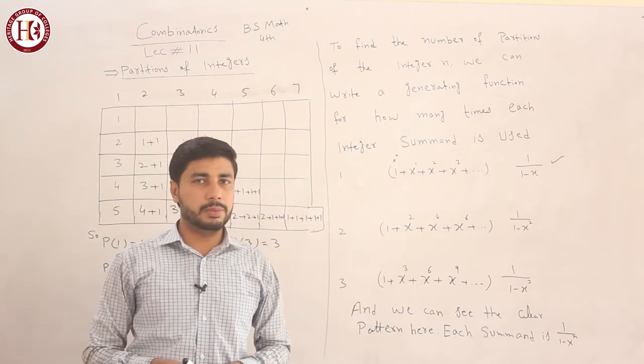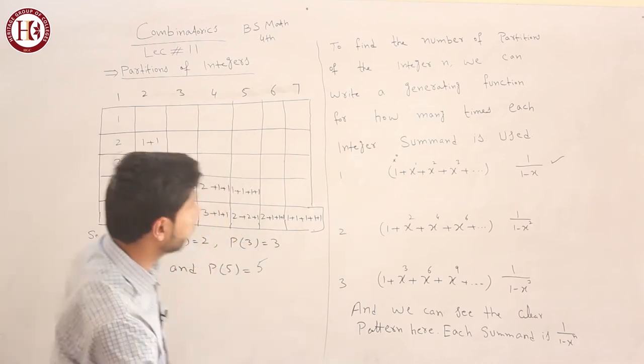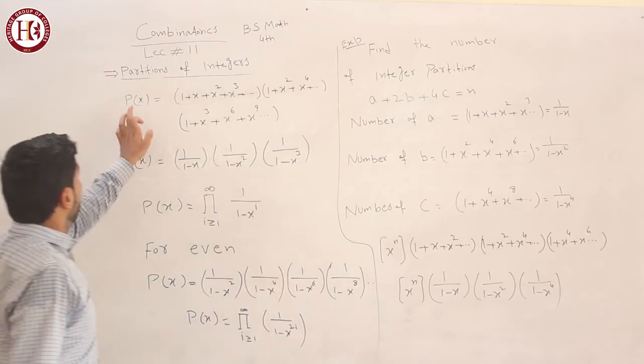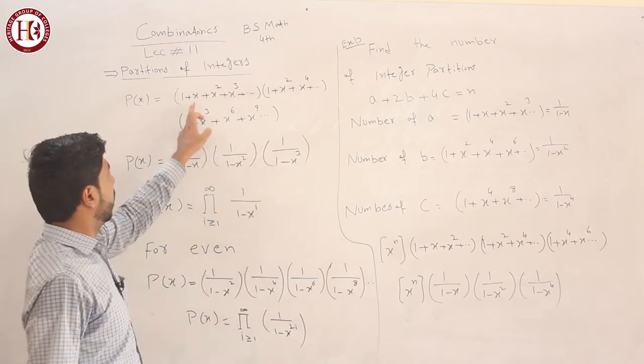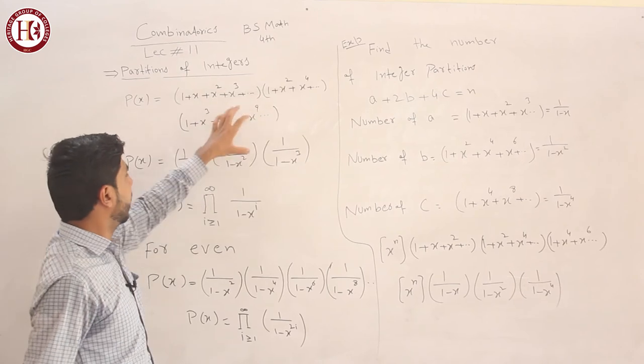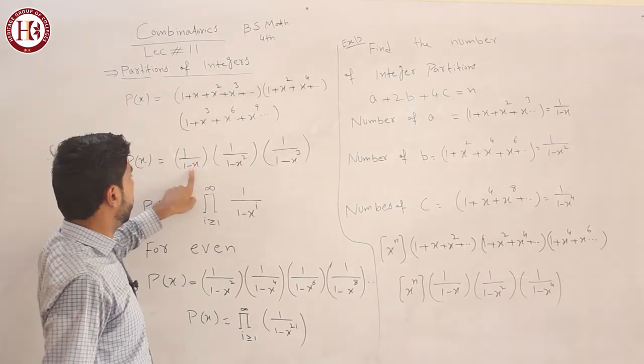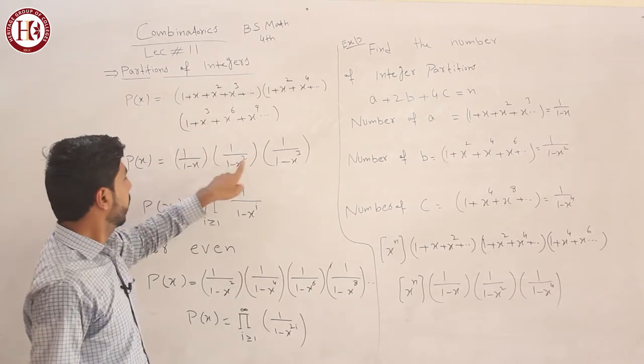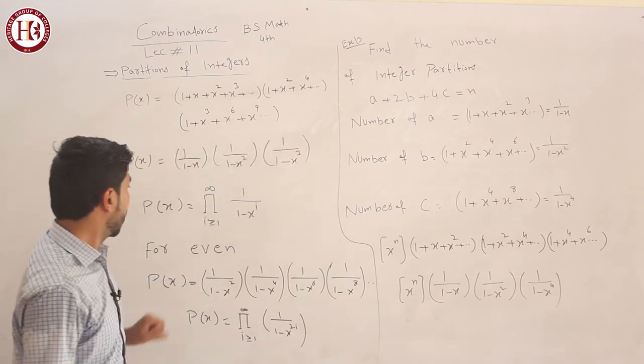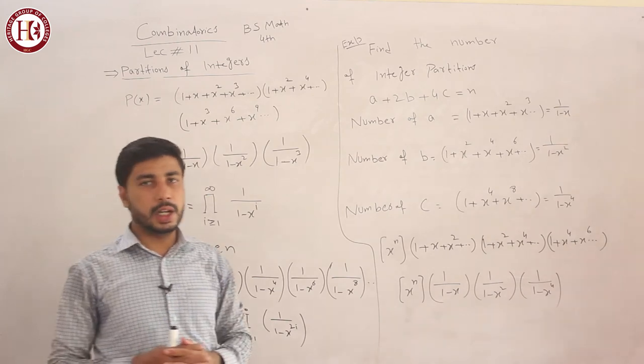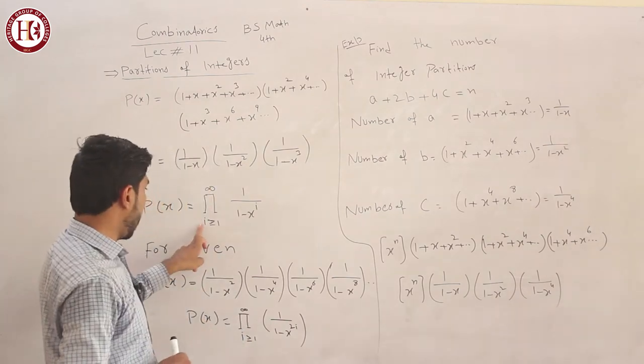Next, we have P(x). I've written this product which we discussed. Now, this can be written as 1 over (1 minus x), then 1 over (1 minus x^2), and so on. We can write this in summation form. This becomes summation i from 1 to infinity.